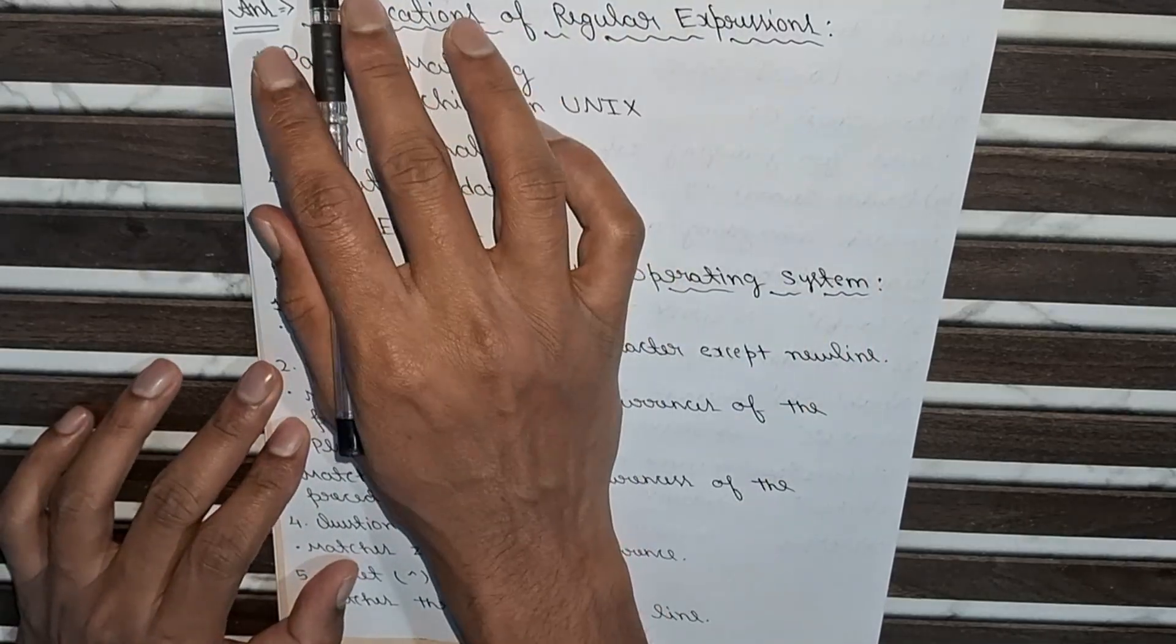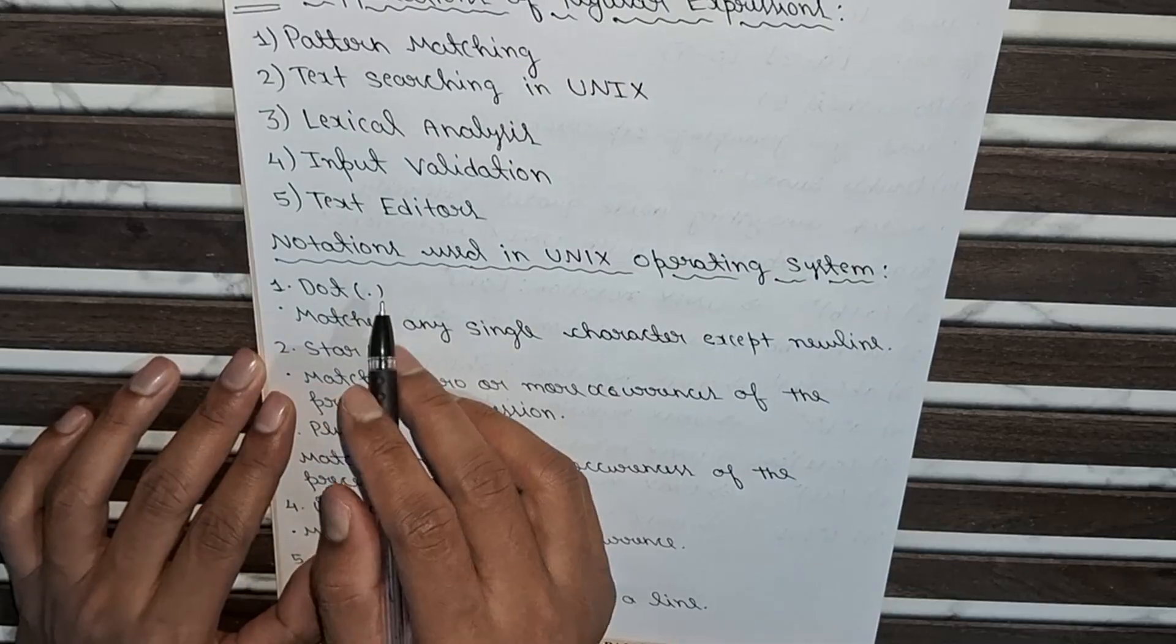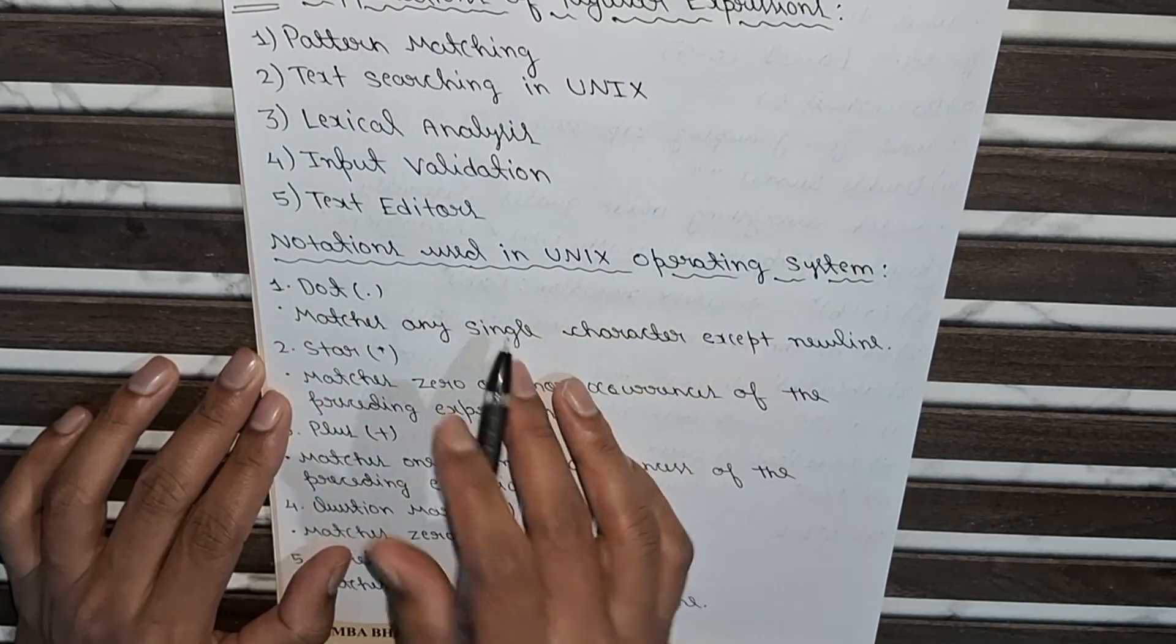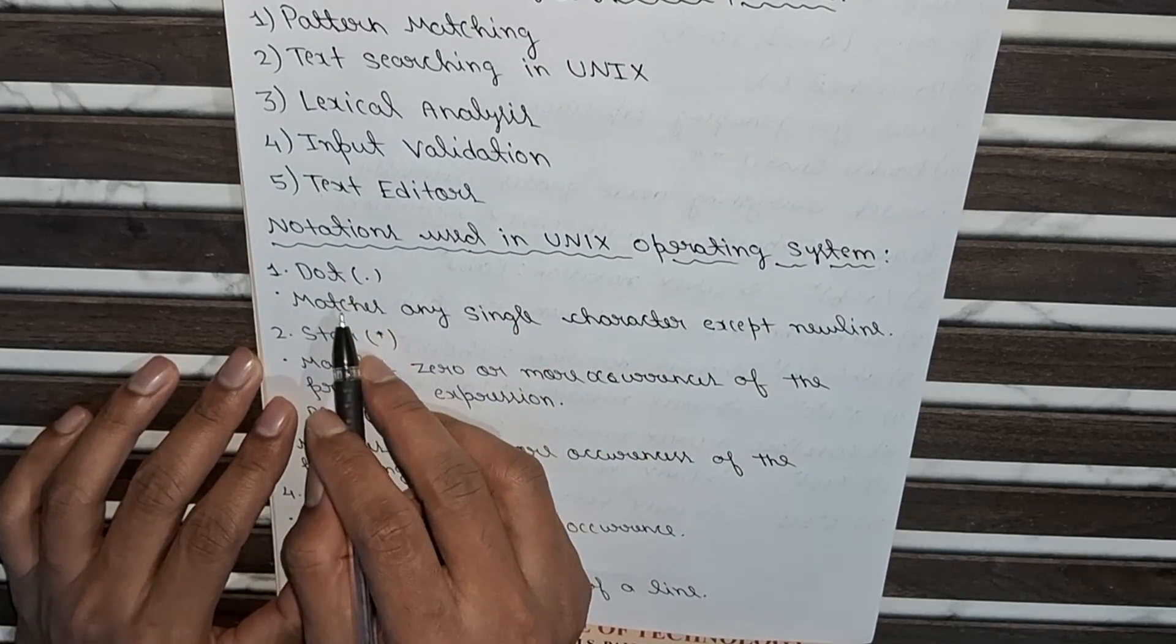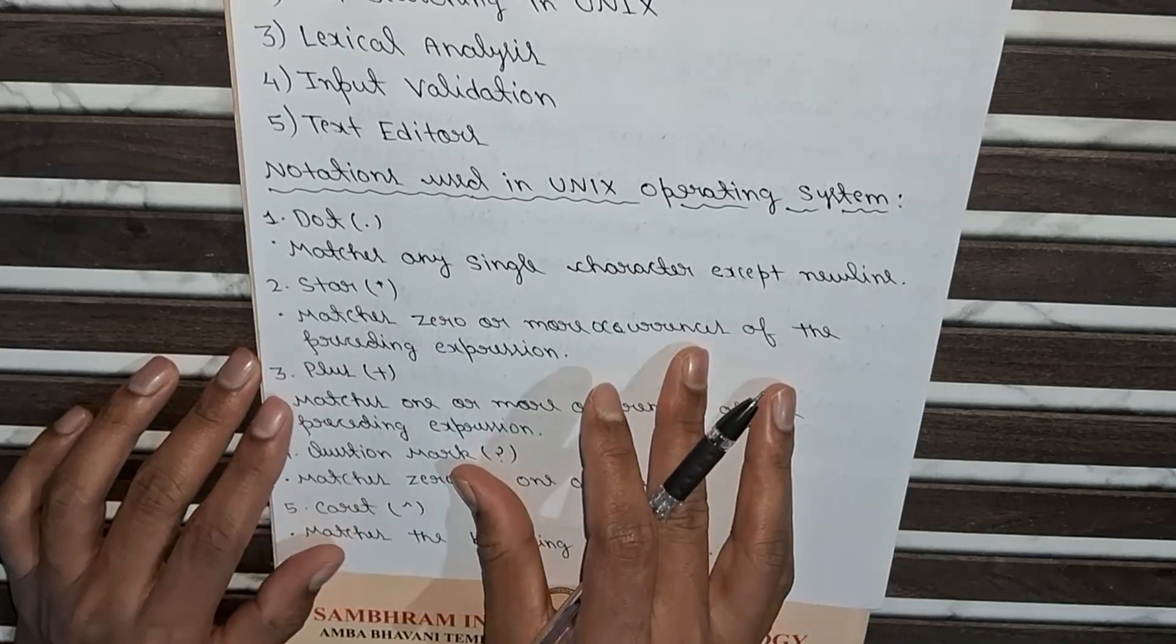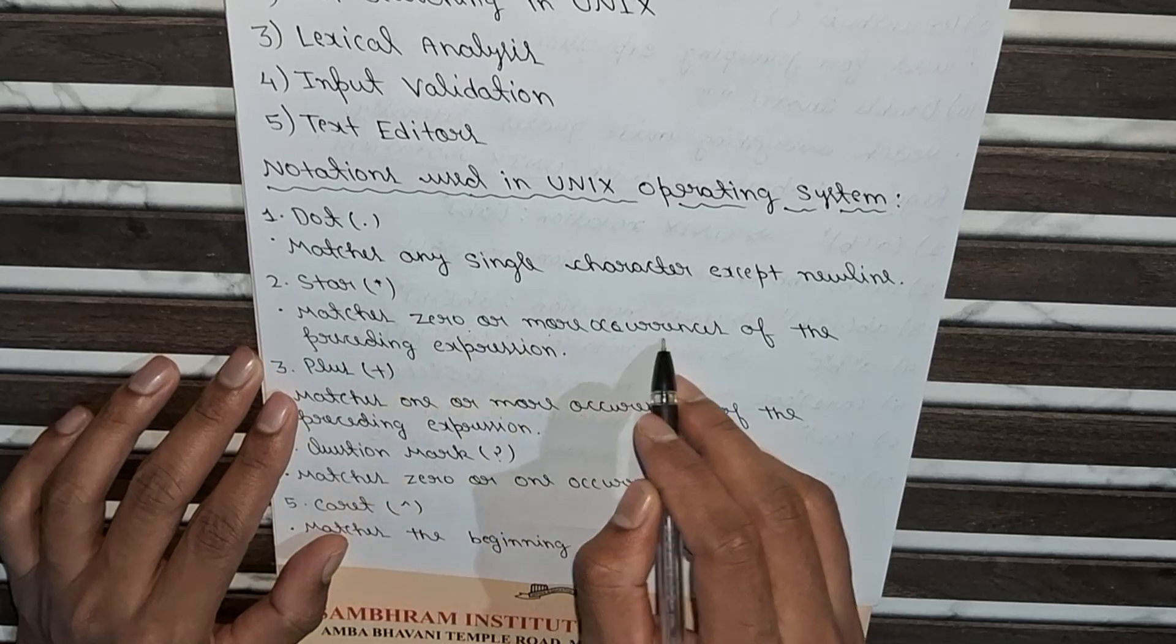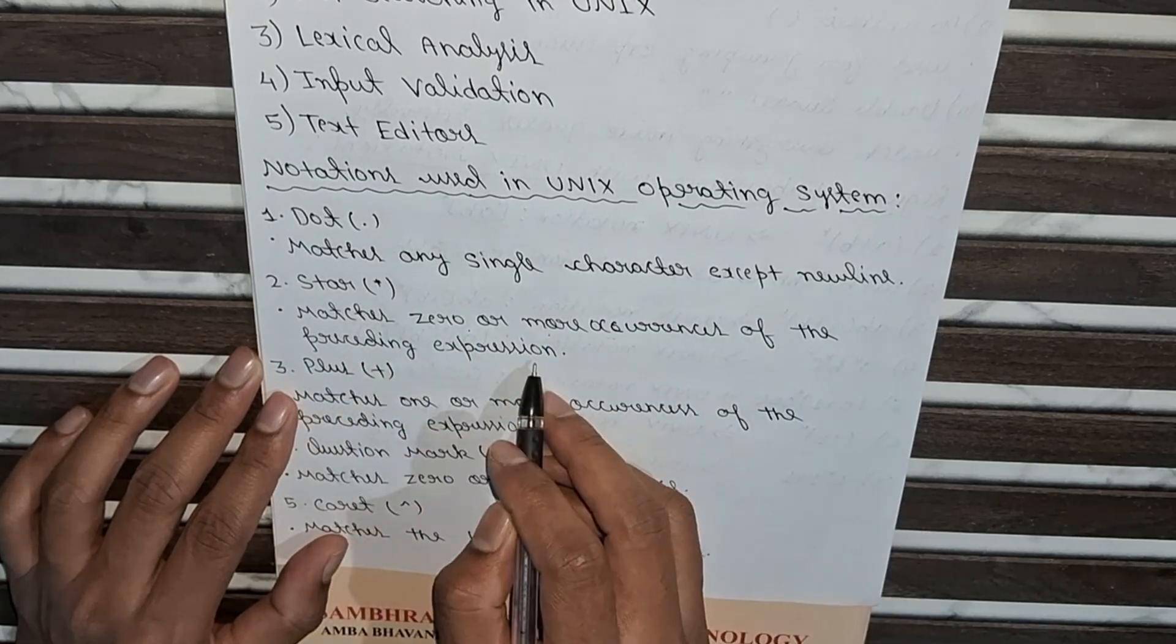And also in the question it is asked the notation used in Unix operating system. So first notation which is used in Unix operating system is dot - dot is used for matches any single character except newline. Second notation is star, it is used to matches 0 or more occurrences of the preceding expression.